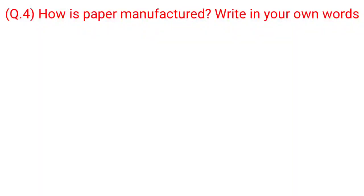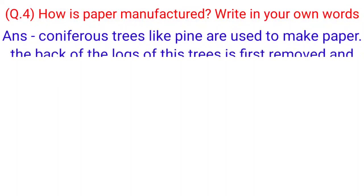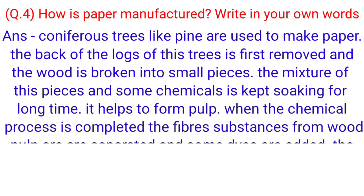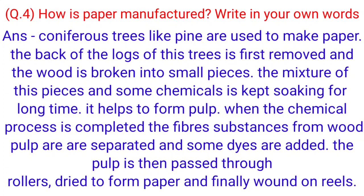Write in your own words. Answer. Coniferous trees like pine are used to make paper. The bark of the logs of these trees is first removed and the wood is broken into small pieces. The mixture of the pieces and some chemicals is kept soaking for a long time. It helps to form pulp. When the chemical process is completed, the fiber substances from wood pulp are separated